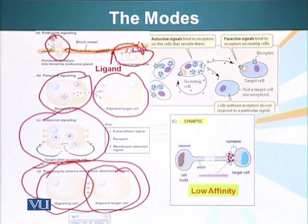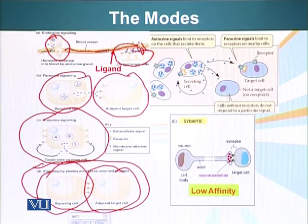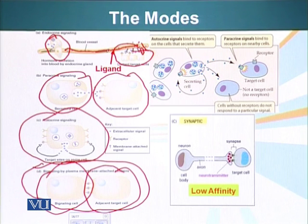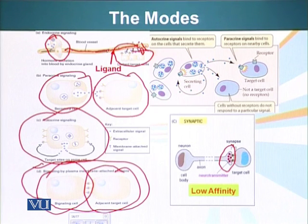There's another type of signaling — synaptic signaling — which occurs between a nerve and a target cell, generally a gland cell or a muscle cell. This involves very low affinity; these signaling molecules have very low affinity for the receptor. So as soon as they are released, they attach to the receptor and are quickly taken back up by the cell that produced them. Here an axon releases a molecule in the space between two cells, the target cell's receptors bind the ligand, it reads the signal and acts accordingly.